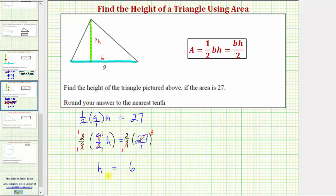So because the solution to the equation is H equals six, we now know the height of the triangle is equal to six units.